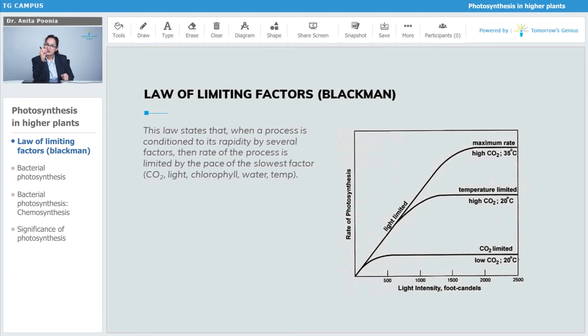Right, so understand this: the law states that when a process is conditioned to its rapidity by several other factors, then the rate of photosynthesis or the rate of that process is limited by the pace, the speed at which the slowest factor is operating. That could be any factor - carbon dioxide, light, chlorophyll, water, temperature.